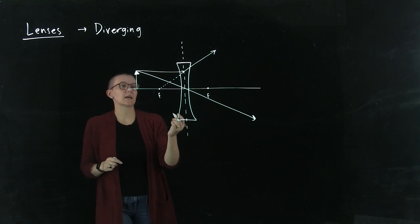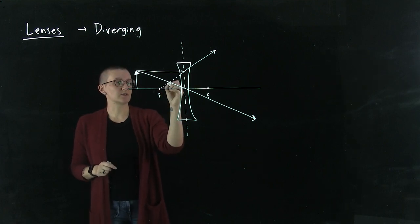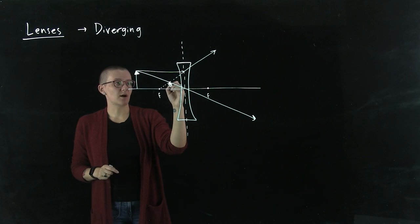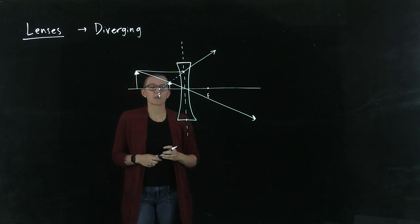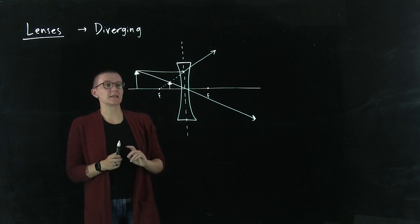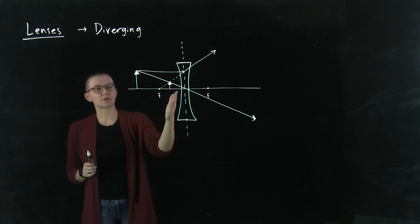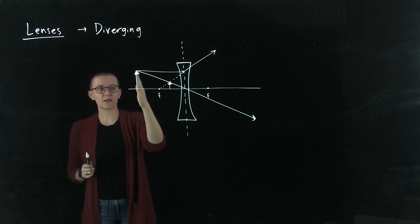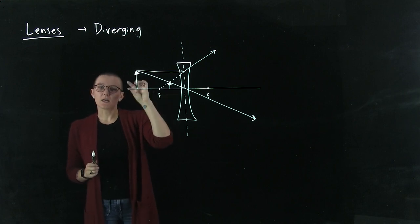Right away, we can see that our rays intersect at this point. We can draw an arrow right there. This is our image and this is our object. In this case, our image shows up on the same side of the object and it's much smaller.